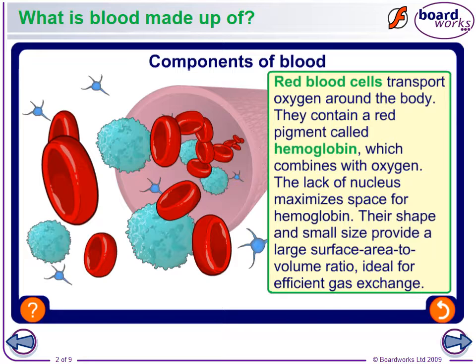Red blood cells transport oxygen around the body. They contain what's called hemoglobin, which combines with oxygen. There is no nucleus in red blood cells, which allows for more hemoglobin, and their small shape and size gives a larger surface area to volume ratio, which makes them ideal for efficient gas exchange.